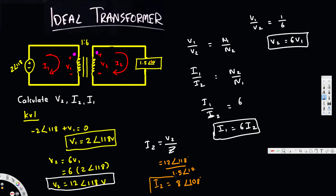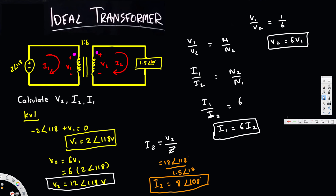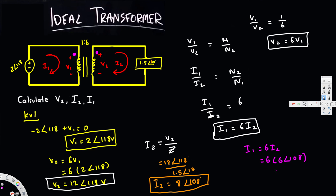From i2 we can find i1, since we know i1 equals 6·i2. So i1 equals 6 times 8∠108°, which gives us i1 equals 48∠108°. That is our final answer. I hope this helps, thanks for watching.